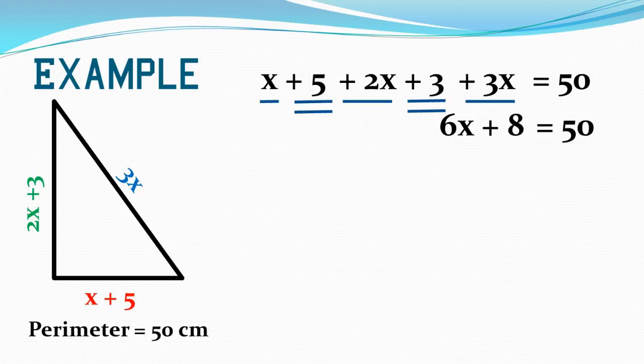This is a two-step equation now. I turned something I may not have recognized, a multi-step equation, into something I do recognize, a two-step equation. I need to ask myself what's happening to my variable and how do I undo that. This variable is being multiplied by 6 and then we're adding 8. So we need to do that in the opposite direction. I'm going to subtract 8 from both sides. 50 minus 8 gives me 42. 6x plus 8 minus 8 gives me just 6x.